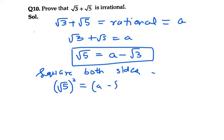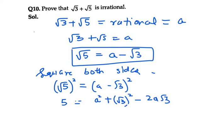Squaring both sides: on the left hand side we get 5, and on the right hand side we get a² + (√3)² − 2a√3. We can cancel the square and square root, so we are left with 5 = a² + 3 − 2a√3.